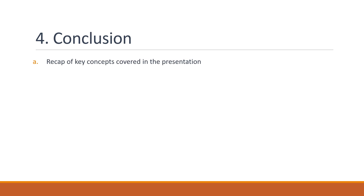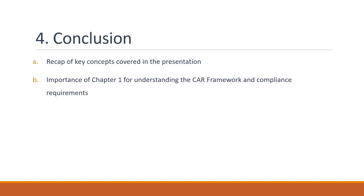Conclusion — Recap of Key Points: In Chapter 1, we covered the basics of the Capital Adequacy Requirements framework for Canadian banks, including the minimum capital requirements and the various risk components. It's crucial for banks to understand the CR framework in order to comply with regulatory capital requirements and maintain their stability. By ensuring they have sufficient capital to absorb unexpected losses, banks can protect themselves and the financial system as a whole from potential financial shocks.